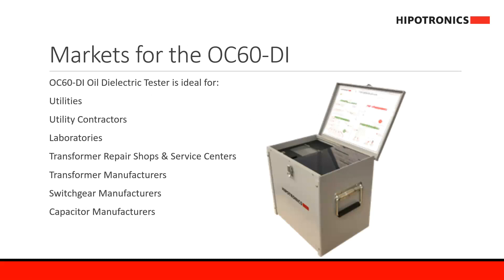The OC60 DI is usually seen in utility companies, utility contractors and laboratories, as well as transformer repair shops and service centers. Additionally, transformer manufacturers, as well as switchgear and capacitor manufacturers, can also use the OC60 DI to test the oil they're using.